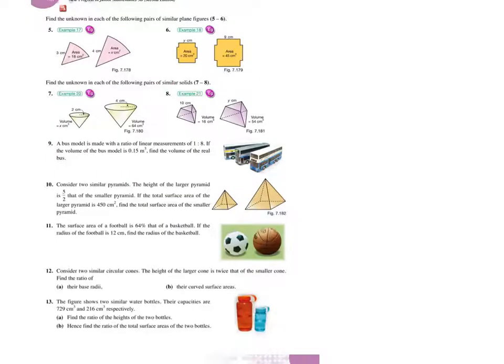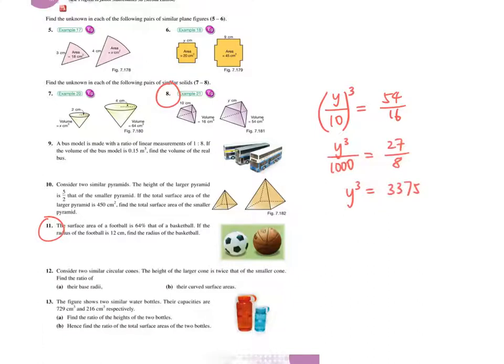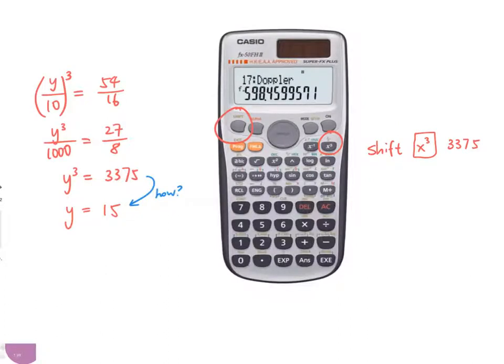Now let's look at exercise 7.5 number 8 and number 11. For number 8, first we have to identify the corresponding parts, find the ratio y over 10, 54 over 16. And then we match the dimension by having the length ratio here, power 3. After some calculation, we will arrive at y to the power 3 equals to 3375. And I suppose some of you may be trapped here. How can you arrive at the final answer from y cube equals to 3375 using calculator? Let me tell you now, if you missed the last lesson, we make use of this button, shift x to the power 3. And then you will see the small symbol here. Then you arrive at 15. So in the mathematics context, you can represent this value by cube root of 3375. Please note that the 3 must be written very small. Because if you write like 3 square root 3375, the answer would be different. The meaning is also different.